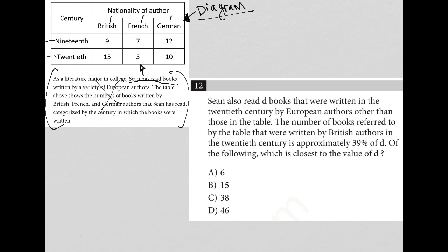Okay, now question number 12 is a longer question, so I'm thinking to myself I might need to use some translate word problem. So I'm going to read this one sentence at a time and make sure I get any quantitative information out of it and translate that quantitative information before I move on. So the first sentence here says, Sean also read D books that were written in the 20th century by European authors other than those in the table.